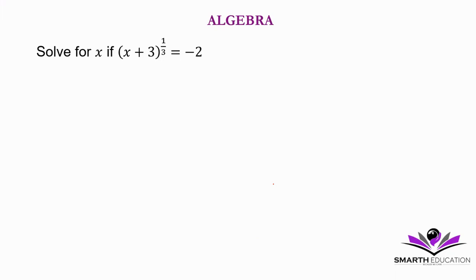We have an exponential equation here with a rational exponent. So what do we do? We have to raise both sides to the power of the reciprocal of this exponent, which is 3 over 1, or just 3.